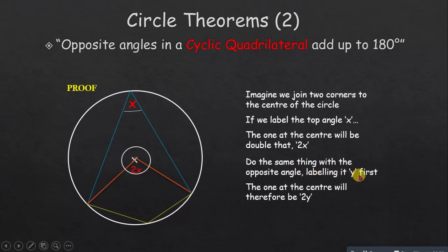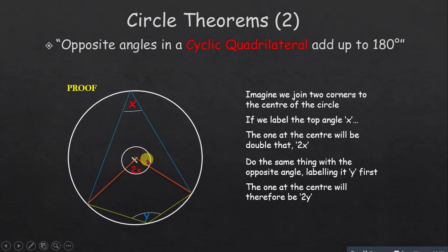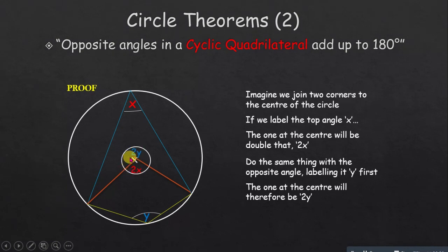Now do the same with the opposite angle, labeling it y at the circumference. The angle at the center will therefore be 2y. That is why we stated that angles a and b at the center always sum up to 360 degrees. So 2y plus 2x will sum up to 360 degrees.